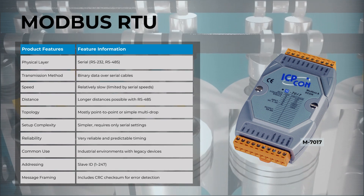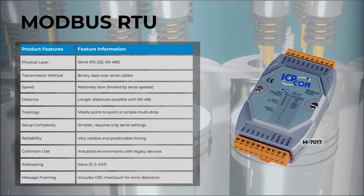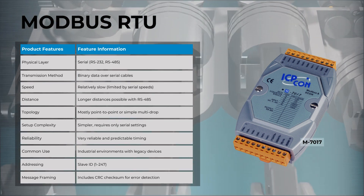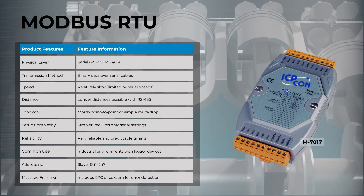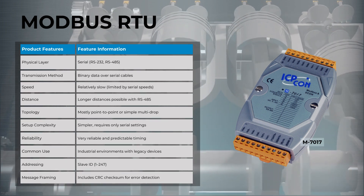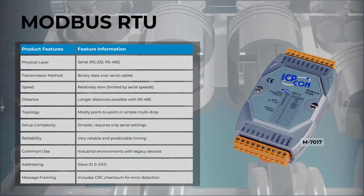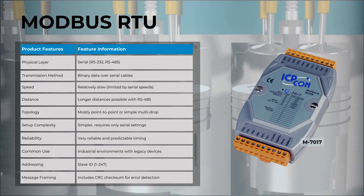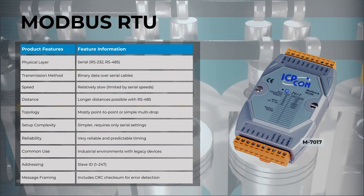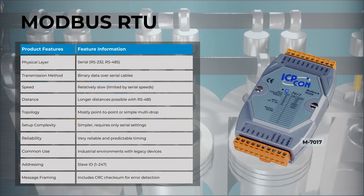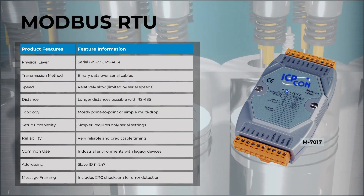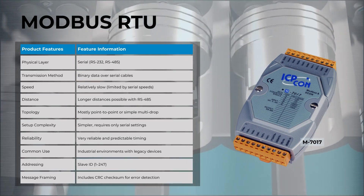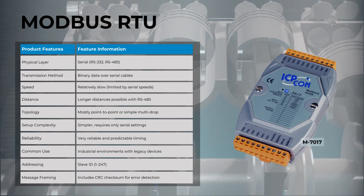Let's dive into Modbus RTU. The physical layer is serial — RS-232 or RS-485 — and the transmission method is binary data over serial cables. RTU speed is relatively slow, limited by serial speeds, but it covers longer distances, possible with RS-485.